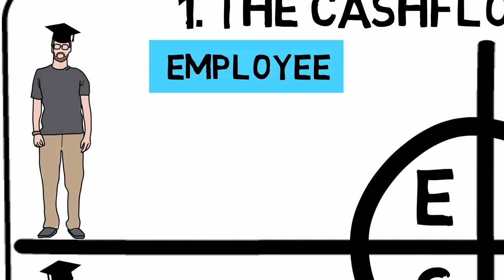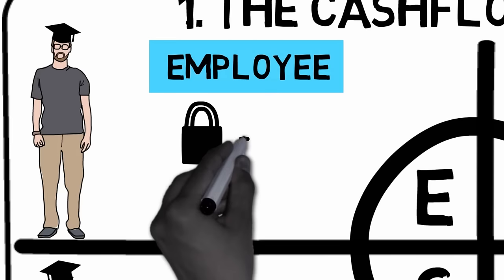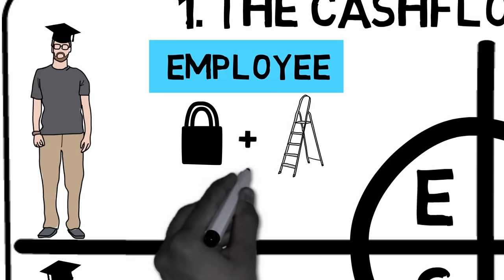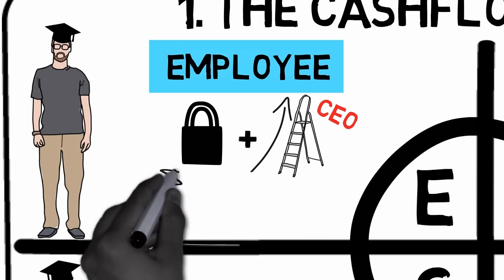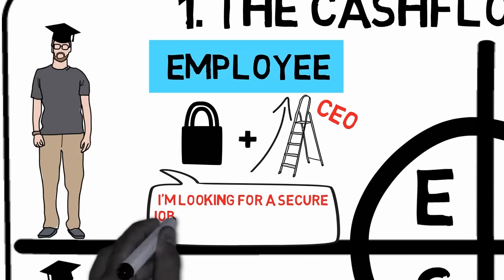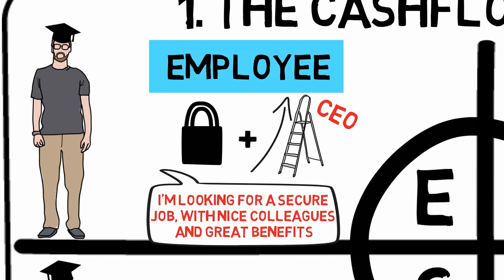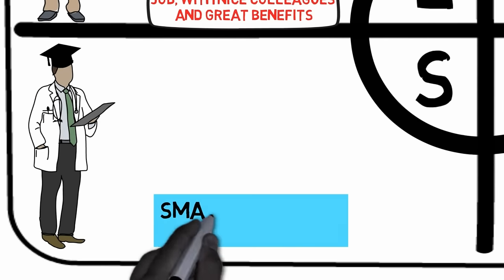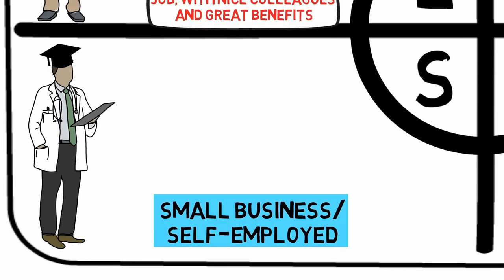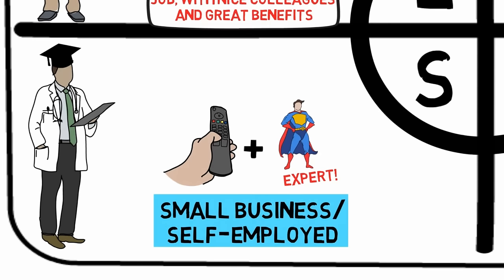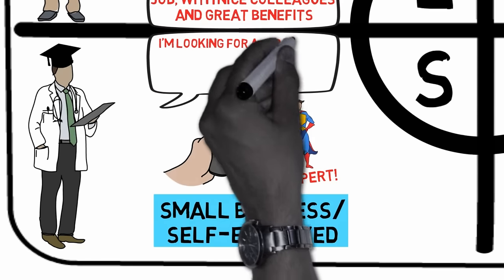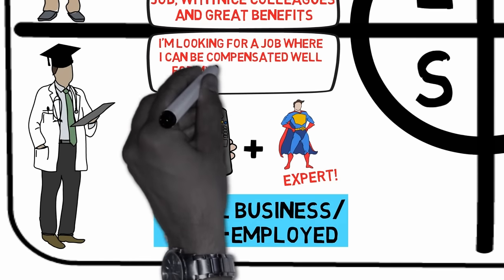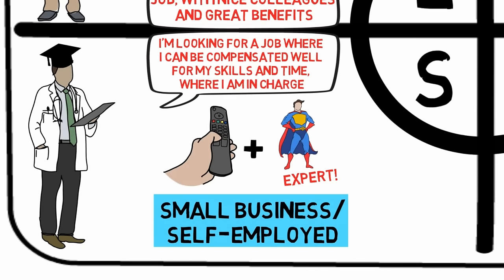The employee strives for security. He achieves financial success by climbing the corporate ladder. You might find him say something like: I'm looking for a secure job with nice colleagues and great benefits. The small business owner or self-employed, on the other hand, strives for control. He achieves financial success by becoming highly specialized in a demanding field. You might find him say something like: I'm looking for a job where I can be compensated well for my skills and time, where I am in charge.